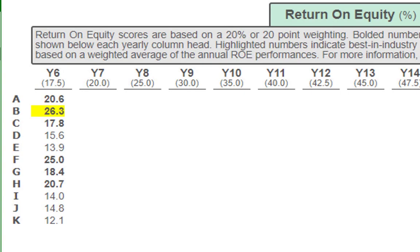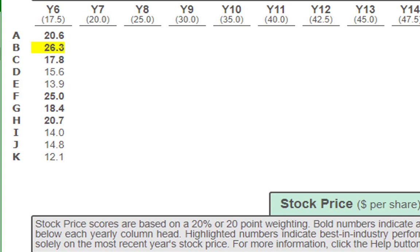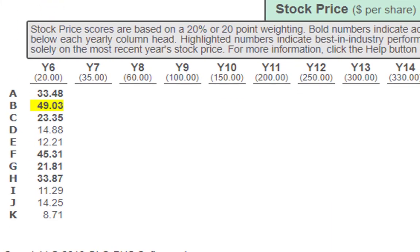Return on equity: team B is the highest so far at 26.3. You also have teams A, C, F, G, and H meeting expectations of the investors — great job. With teams D, E, I, J, and K, I'm not too concerned yet — it's just one year. I'm continuing to look for that increase. So we'll move on to the stock price for right now.